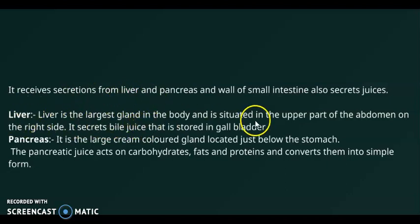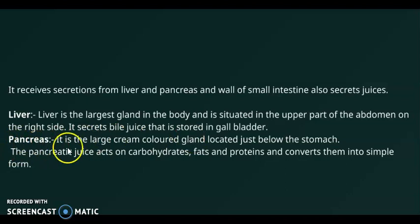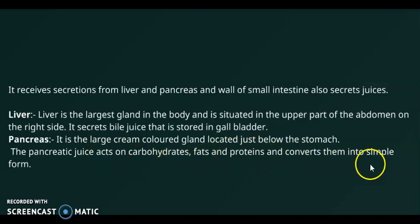The liver is the largest gland and is situated in the upper part of the abdominal region on the right side. It secretes bile juice, which is stored in a small structure called the gallbladder, located near the liver. The pancreas is the second largest gland, cream-colored, located between the stomach and the intestine. It secretes pancreatic juice which can digest carbohydrates, fats, and proteins, converting them into simple forms.